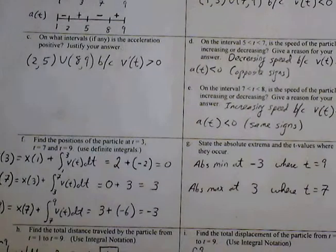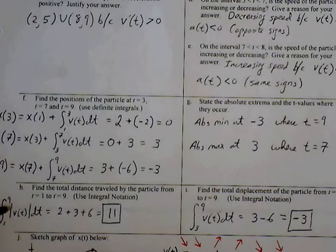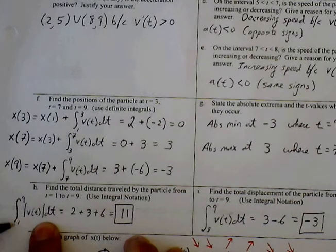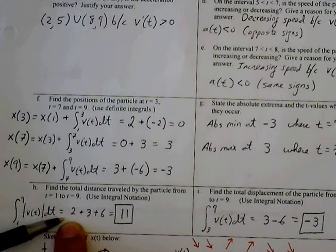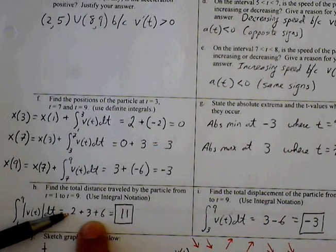Part H, find the total distance. Distance is simply the absolute value of v of t. From 1 to 9, we are going to keep all the areas positive. So 2 plus 3 plus 6 gives us 11.